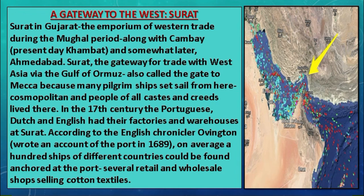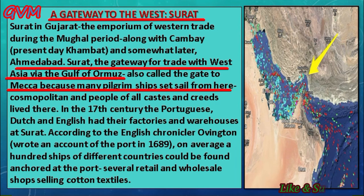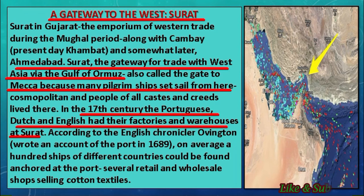The next case study is about Surat, also known as a gateway to the west. The city of Surat under the Mughals was cosmopolitan, as people of all castes and creeds lived there. During the Mughal period, Surat, Cambay (known as Khambhat today), and later Ahmadabad carried out trade with West Asia through the Gulf of Ormuz. Surat was also called the gateway to Mecca because pilgrim ships set sail from there. In the 17th century, the Portuguese, the Dutch, and the English set up their factories and warehouses in Surat.